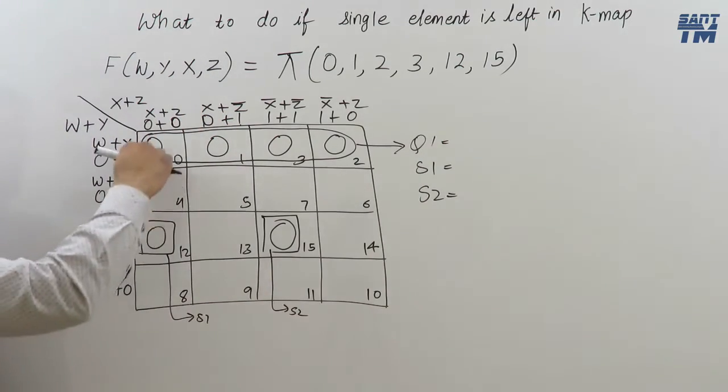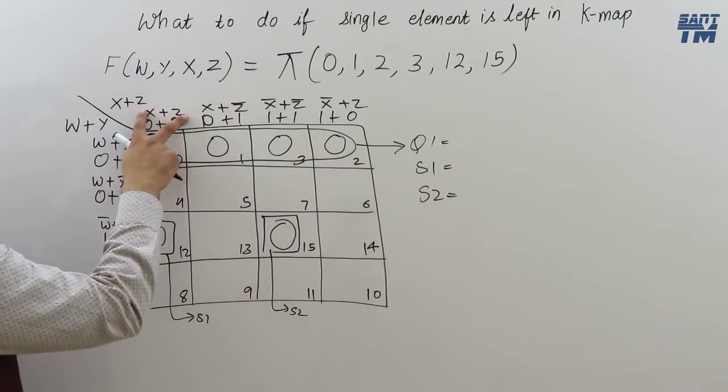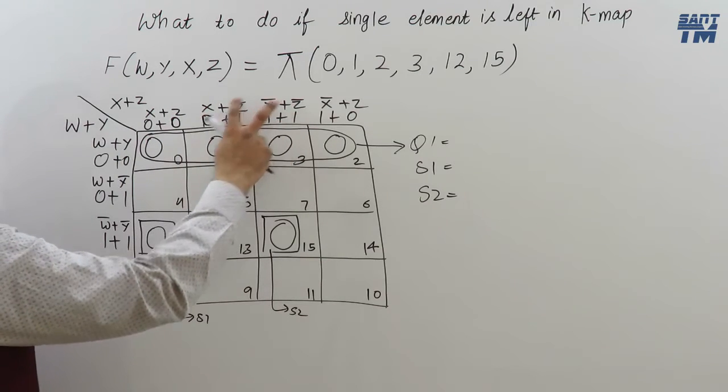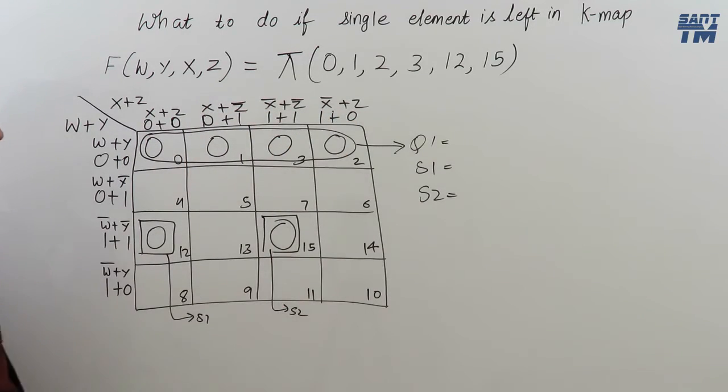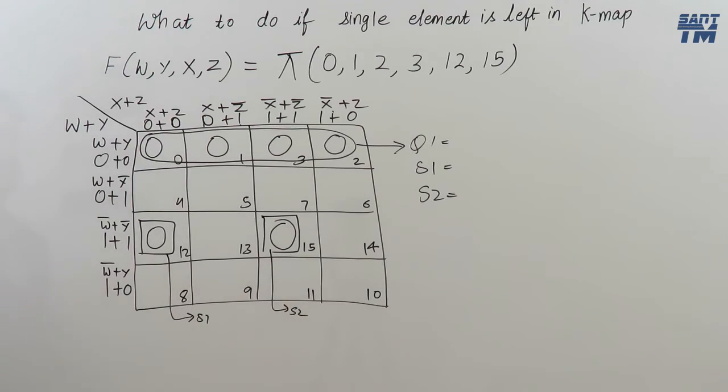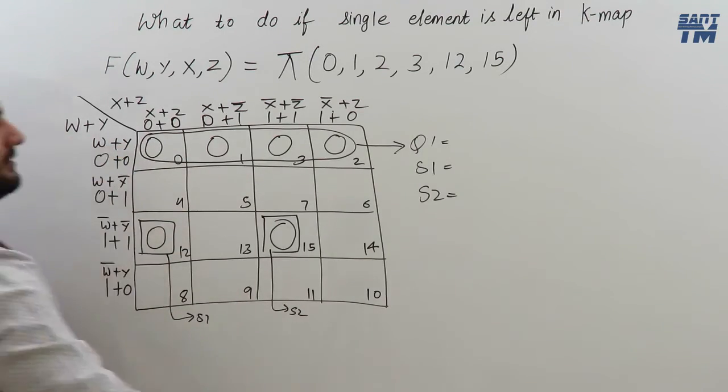So, for quad 1, it is occupying all the 4 columns. X plus Z will be cancelled with X bar plus Z bar. X plus Z bar will be cancelled with X bar plus Z. So, nothing is left in the column side. Now, in the rows, W plus Y is left fully.